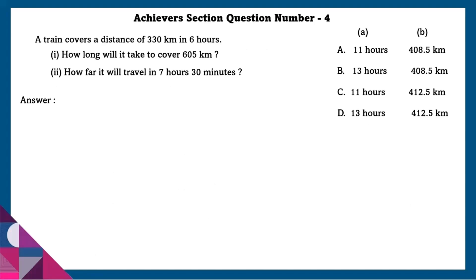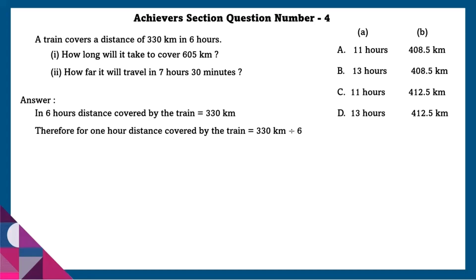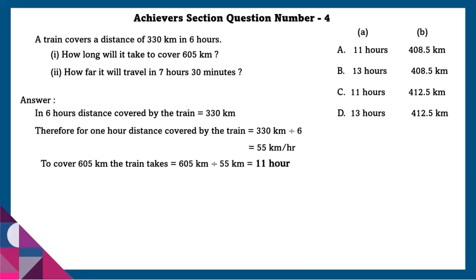Achiever section question number 4: A train covers a distance of 330 kilometers in 6 hours. First, how long will it take to cover 605 kilometers? In 6 hours, distance covered is 330 kilometers, so for 1 hour it is 55 kilometers per hour. To cover 605 kilometers, the train takes 605 divided by 55, which equals 11 hours.